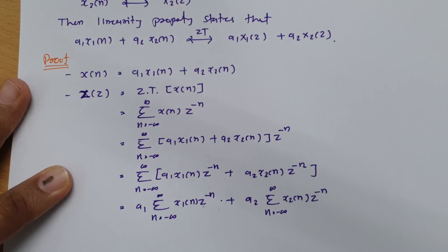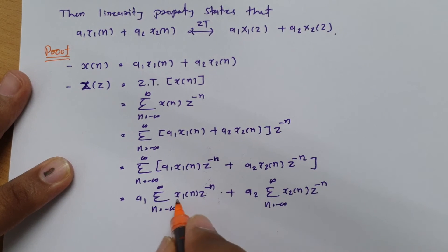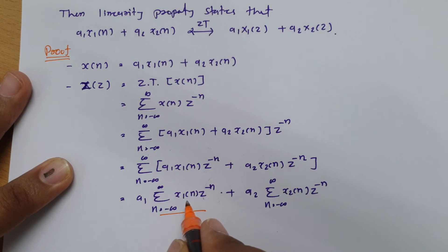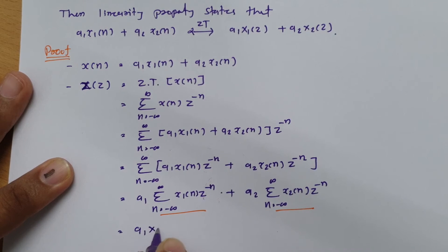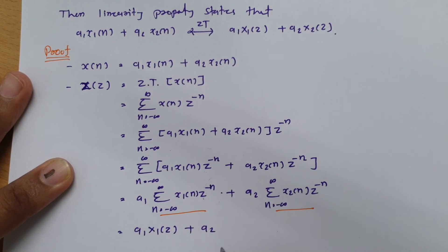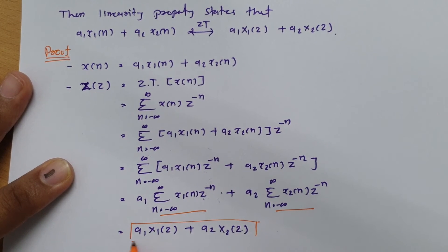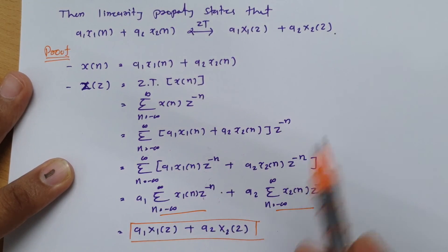We can identify that the first summation is the Z-transform of x1(n), which is X1(z), and the second is the Z-transform of x2(n), which is X2(z). So the result is a1·X1(z) + a2·X2(z), and this is what we have proved — the linearity property of the Z-transform.